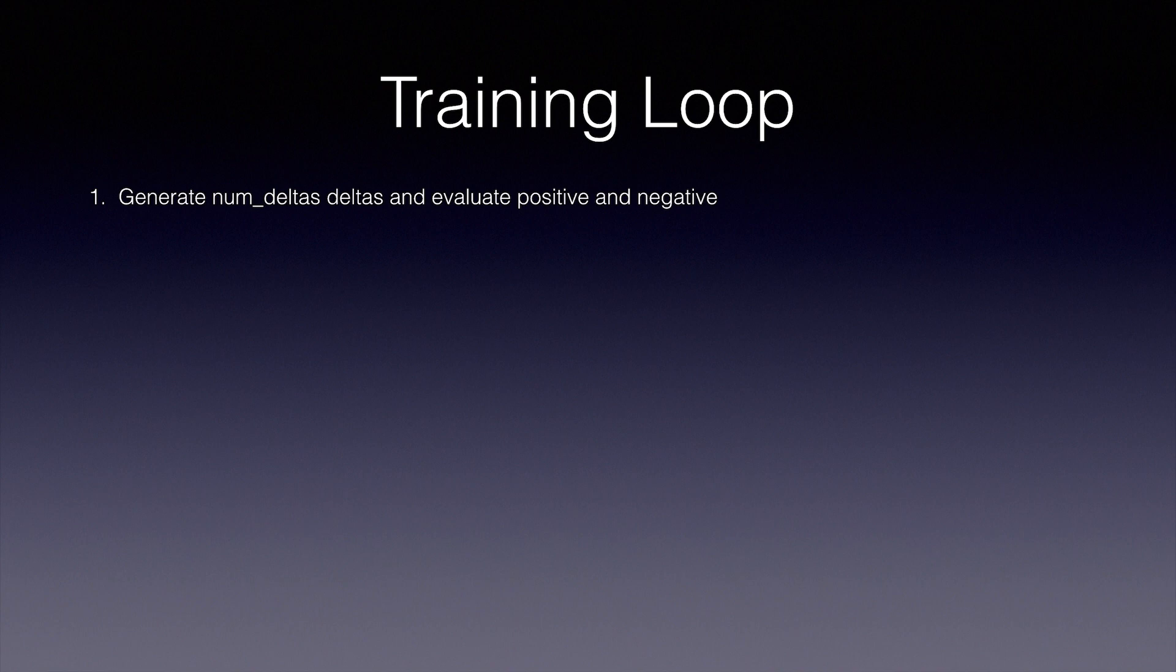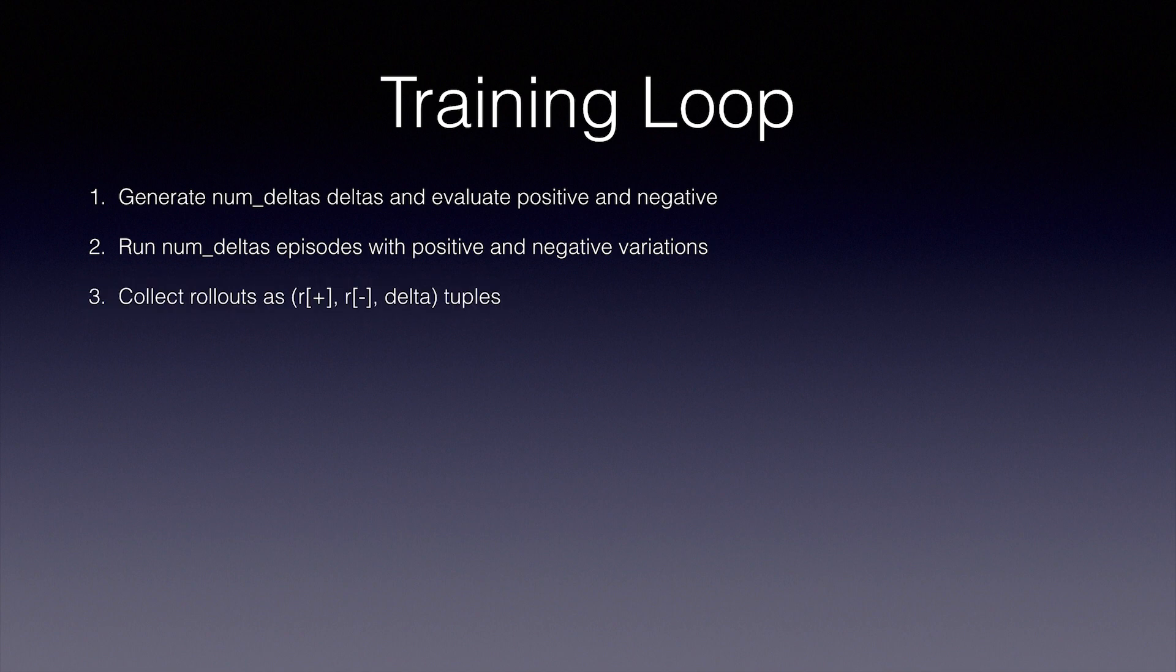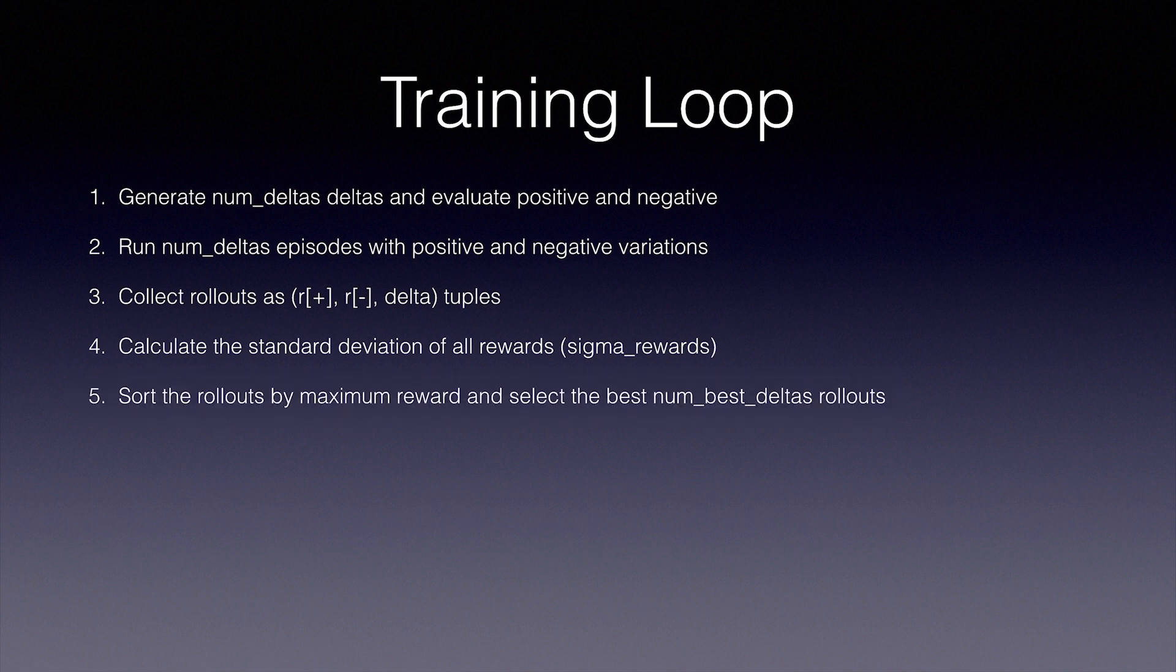We're going to run num deltas episodes with positive and negative variations. We collect rollouts as reward positive, reward negative, and delta tuples. We calculate the standard deviation of all the rewards. We sort the rollouts by the maximum reward and select the best num deltas rollouts.